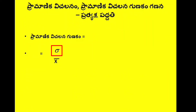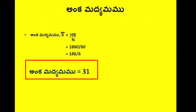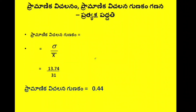The coefficient of standard deviation is sigma divided by mean. Sigma is equal to 13.74. Mean is equal to 31. So the coefficient is 13.74 divided by 31, which equals 0.44.